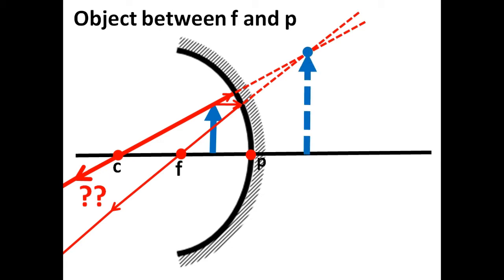That is where the image is formed. This image is virtual because it is formed at the back of the mirror. And this is the only case in which a concave mirror forms a virtual image — only when the object is placed between the mirror and its principal focus.